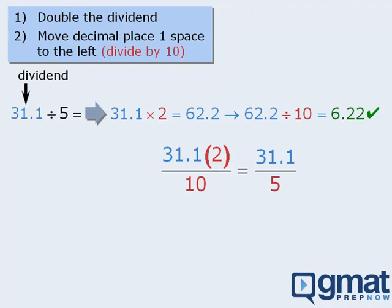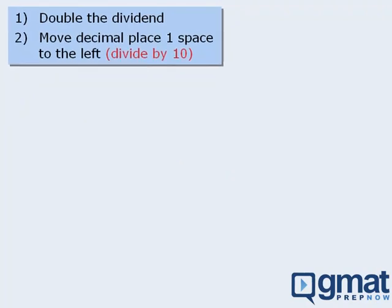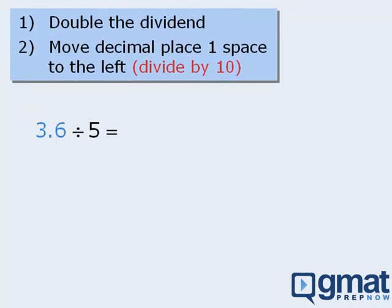Okay, now that you know why the technique works, let's have you try a few more examples. What about 3.6 divided by 5? I'll give you 5 seconds to find this answer. Well, first we'll double 3.6 to get 7.2. And then we'll take the result and move the decimal place to get 0.72.